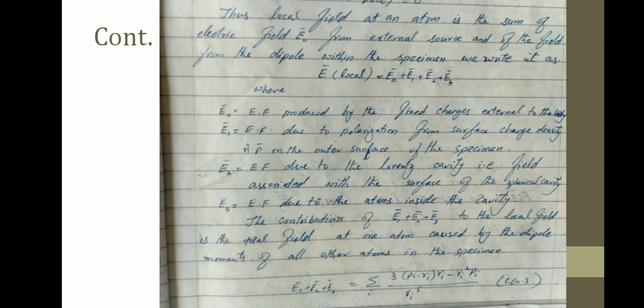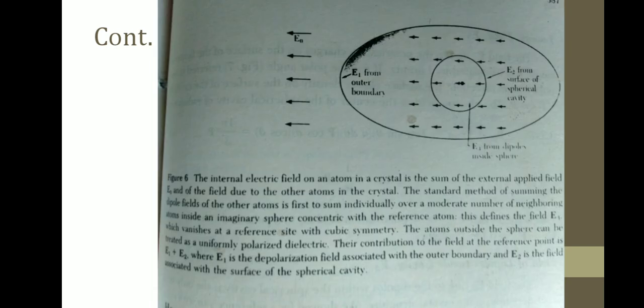E1 is the electric field due to polarization from surface charge density on the outer surface of the specimen. E2 is the electric field due to the Lorentz cavity — that is, the field associated with the surface of the spherical cavity. E3 is the electric field due to atoms inside the cavity. The contributions E1 + E2 + E3 to the local field represent the total field at one atom caused by the dipole moments of all other atoms in the specimen, and can be written as Σ_i [3(p_i · r̂_i)r̂_i − p_i·r_i²] / r_i⁵ in the CGS system. We can visualize all these electric fields in a diagram.